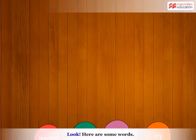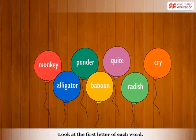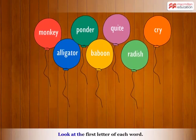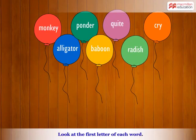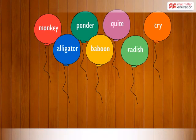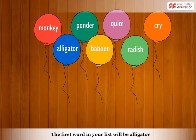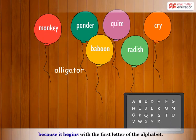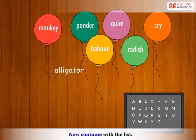Look! Here are some words. Look at the first letter of each word. Can you put these words in alphabetical order? Do this in your notebooks. The first word in your list will be alligator because it begins with the first letter of the alphabet. Now continue with the list.